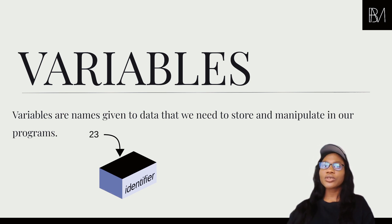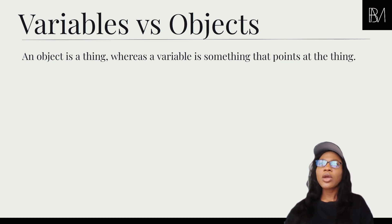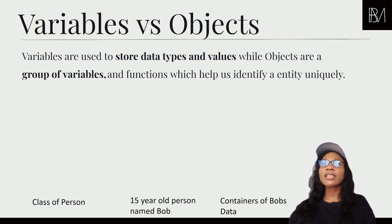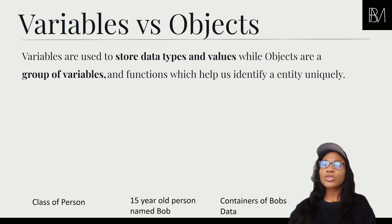What's the relationship between variables and objects? An object is a thing, but a variable is something that points at the object. If you think about an object as something that stores data types and values, an object stores a group of variables.